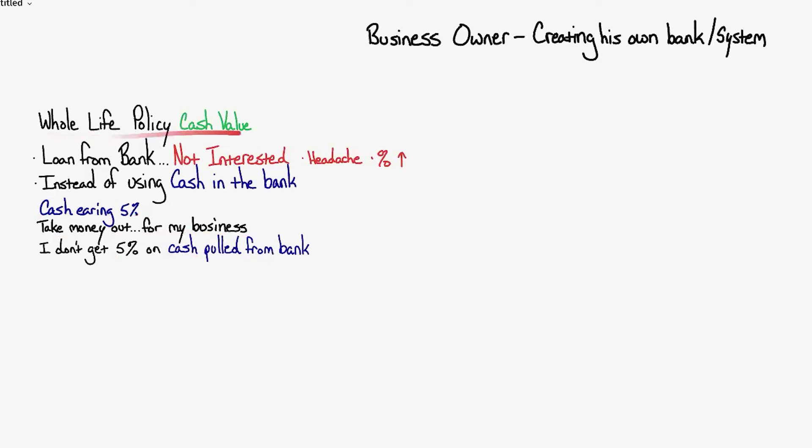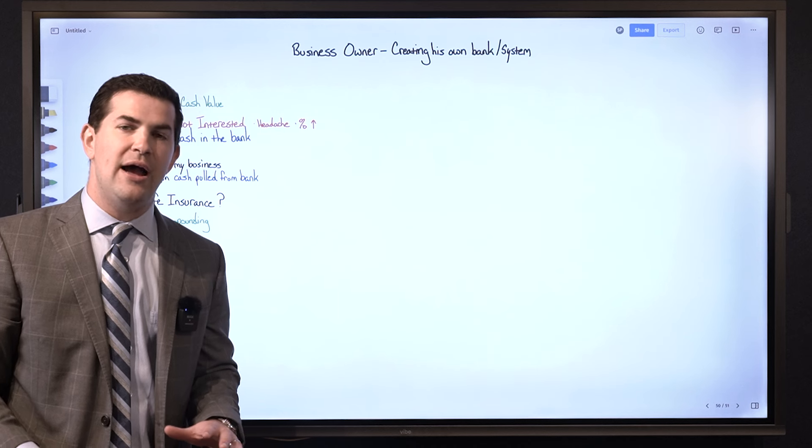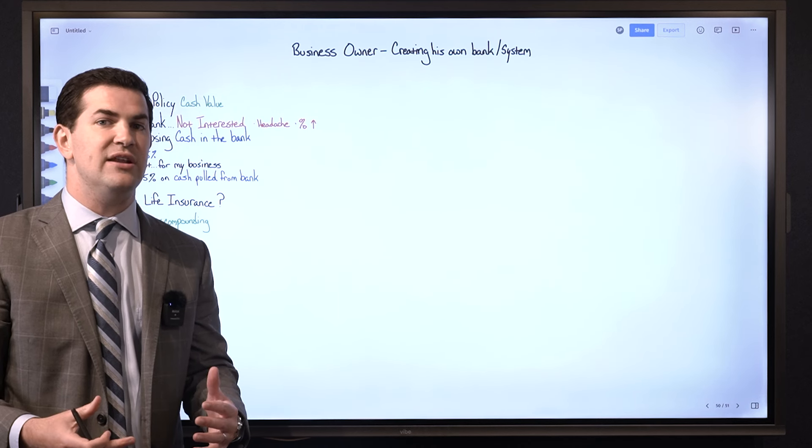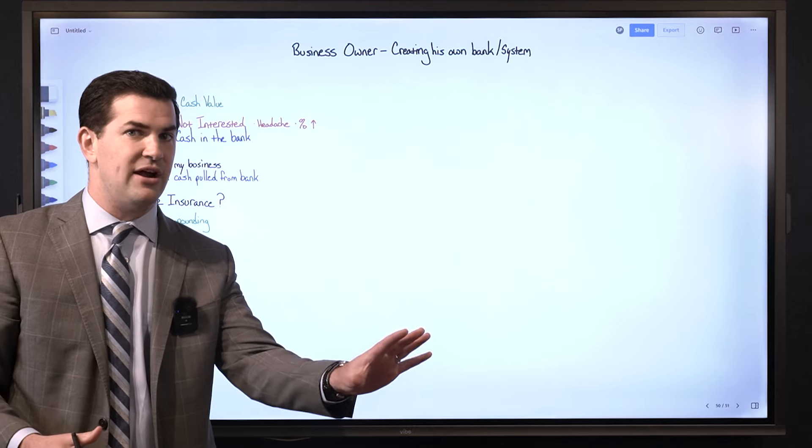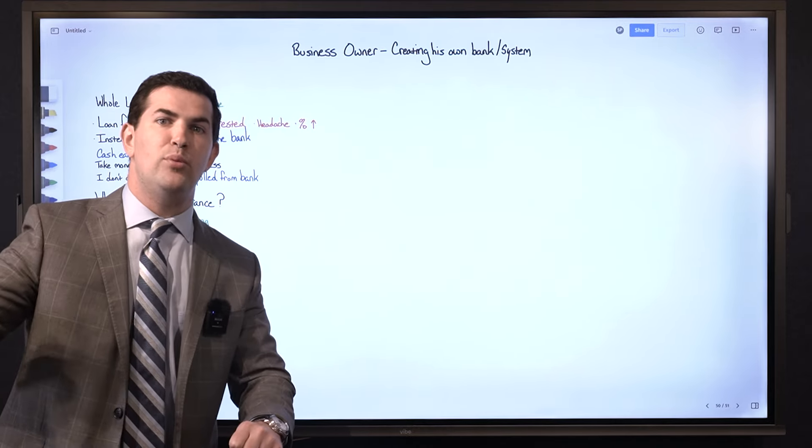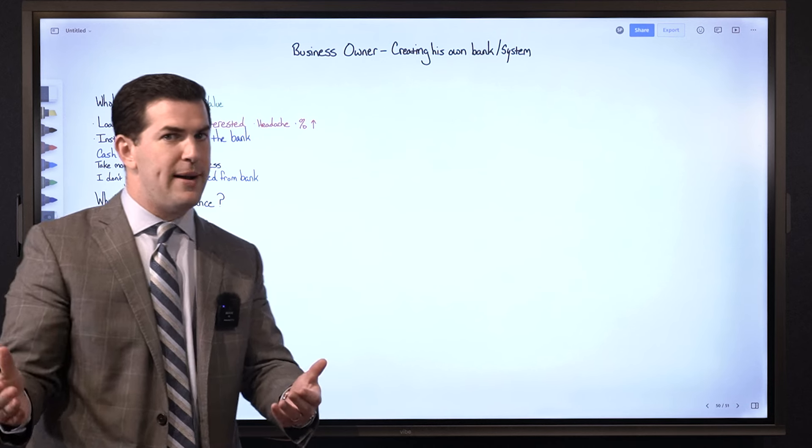So how is using a whole life insurance policy different than that? With a whole life insurance policy when I access my money it keeps on compounding. When I access the cash value I continue to receive dividends on any money that is still in cash value that I have not touched, and also what I've pulled out if I've pulled it out through a policy loan.